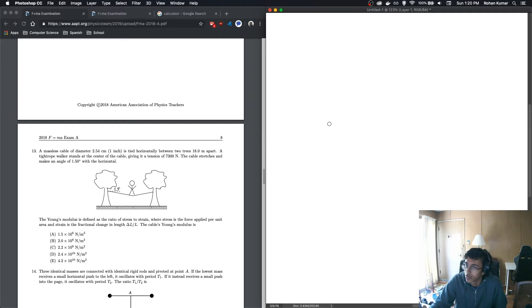Number 13. A massive cable of diameter 2.54 centimeters, 1 inch, is tied horizontally between two trees 18 meters apart. A tightrope walker stands at the center of the cable, giving it a tension of 7,300 newtons. The cable stretches and makes an angle of 1.5 degrees with the horizontal. The Young's modulus is defined as the ratio of stress to strain, where stress is a force applied per unit area, and strain is a fractional change of the length, delta L over L. The cable's Young modulus is... Let's see.